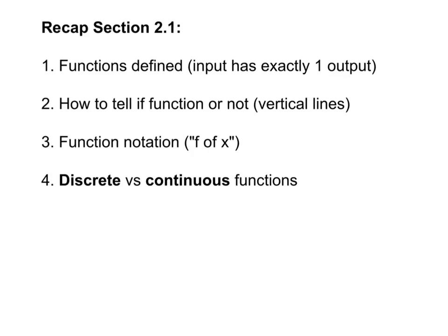That's what we've done so far. In section 2.1, we've defined functions. The important part is, ask yourself, is it true that each input has exactly one output? Second, we decided how to tell if a function is a function or not, a relation is a function or not, and the key there was the vertical line test. Does any input have more than one output?